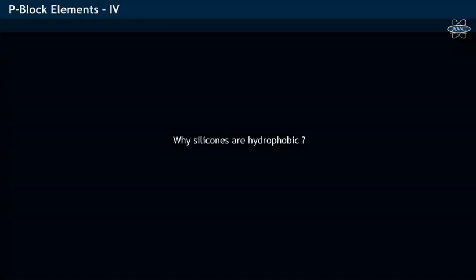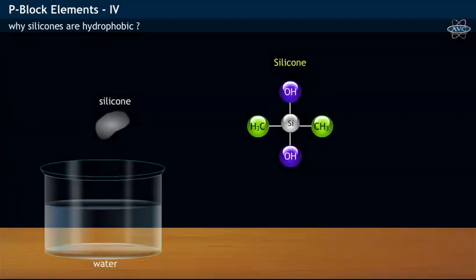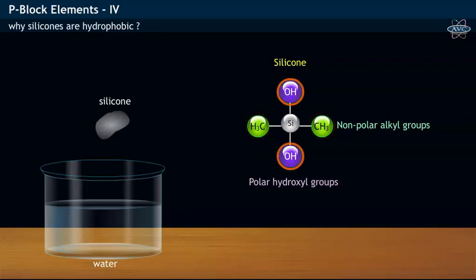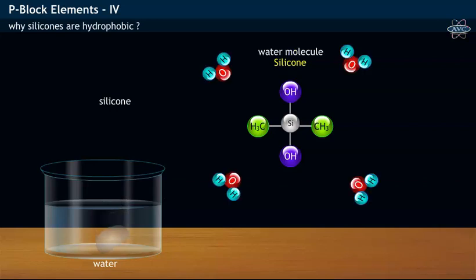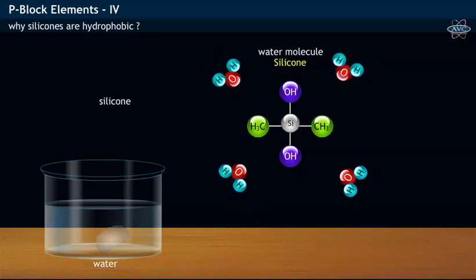Why are silicones hydrophobic in nature, that is, fear water? Silicones consist of two non-polar methyl groups and two polar hydroxyl groups. When silicones are dissolved in water, the water molecule (H2O) approaches the silicon molecule.